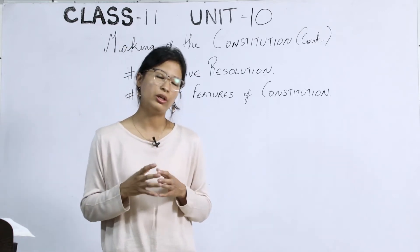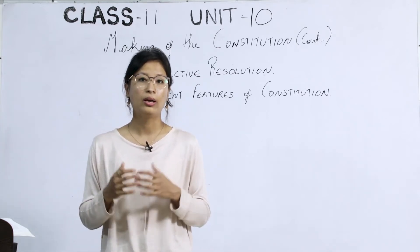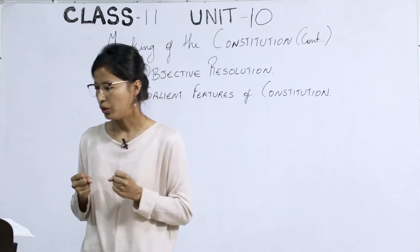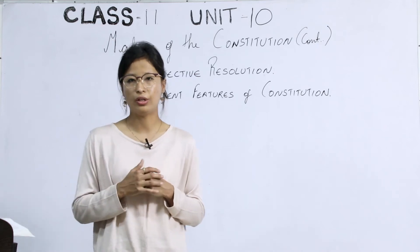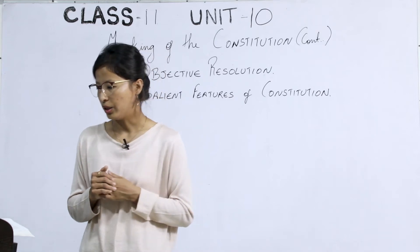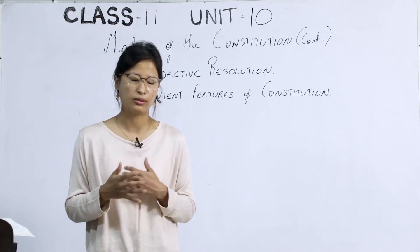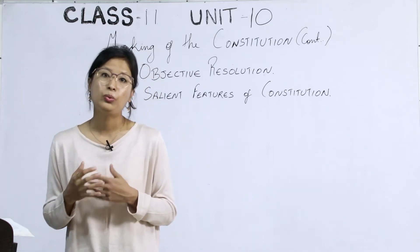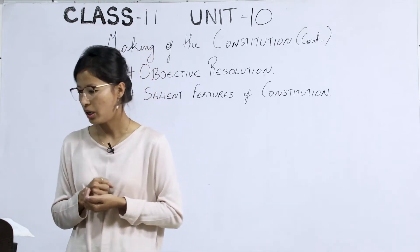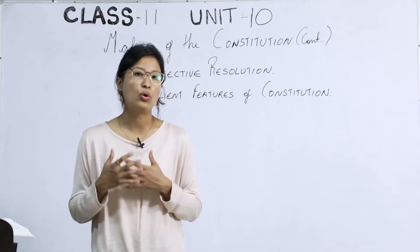Point number two: India should be a union of territories, as we find in Article 1 also. It also says that all those territories who are willing to be a part of India will come under the union of territories. Point number three: sovereign India shall derive all its powers from the people.